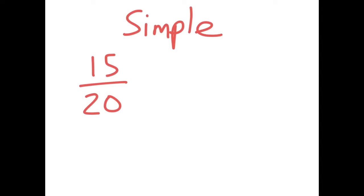We're trying to take that fraction and make it as simple as possible. So for instance, 15 twentieths, if we were to simplify it, actually becomes 3 quarters. And that is the simple version of 15 twentieths — 3 quarters. But how in the world do you work that out? Well, that's what we're going to show you how to do.